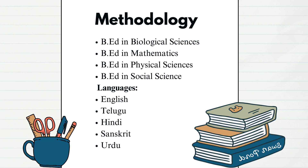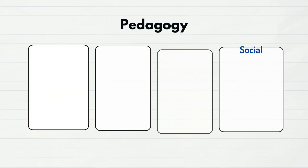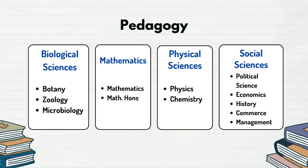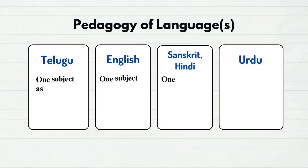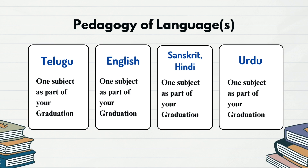You will be getting to know more about methodologies in the coming slides. As a student, I always had this question: why should a student study all six subjects when a teacher teaches only one? I got to know the answer very recently while working on this B.Ed program and structure. In order to become a teacher of a specific subject — for example, to become a biological sciences teacher — you should also have some background in that subject, such as botany, zoology, microbiology, or biotechnology as part of your graduation. Similarly, to become a language teacher of English, Sanskrit, Hindi, or Urdu, you should have that particular language as part of your undergraduate degree.